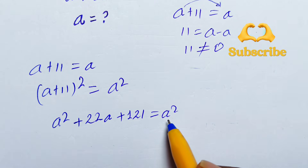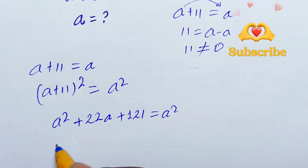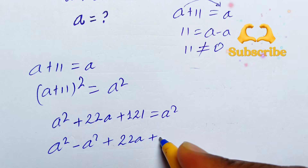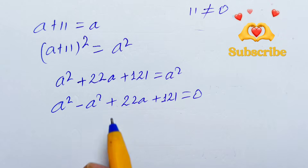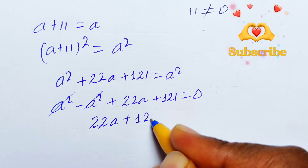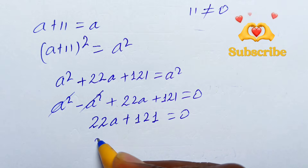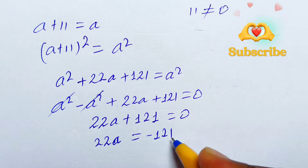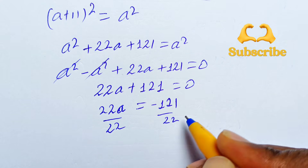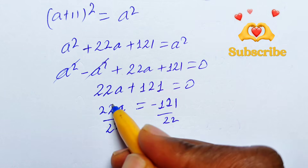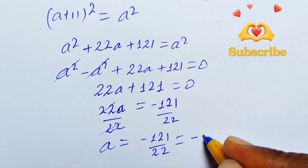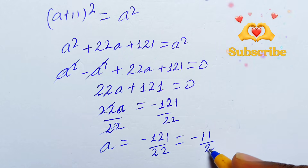Now let's collect the terms on one side. Moving a² to the left: a² − a² + 22a + 121 = 0. The a² terms cancel, leaving 22a + 121 = 0. So 22a = −121. Dividing both sides by 22, we get a = −121/22, which simplifies to a = −11/2. This is the value of a.